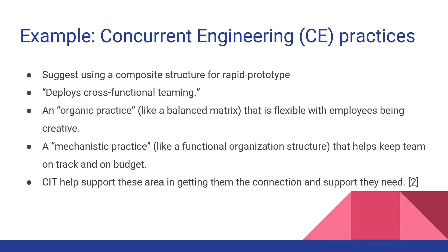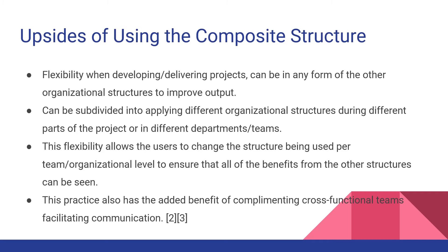CE suggests that a composite organizational form is best for rapid prototyping and cost-effective product development. The composite organization in CE deploys cross-functional teaming, an organic practice like a balanced matrix that facilitates creativity, and mechanistic practice like a functional organization structure that helps keep cross-functional team design projects on schedule and within budget. CIT can extend these capabilities by facilitating communication across disparate functions and by allowing product design teams to take part in design controls and software applications.